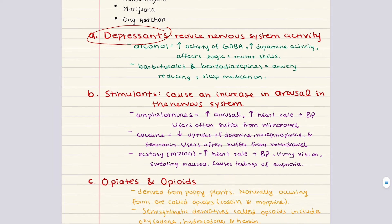Stimulants cause an increase in arousal in the nervous system, each by different mechanisms. The three categories are amphetamines, cocaine, and ecstasy. Amphetamines cause increased arousal by increasing the release of dopamine, norepinephrine, and serotonin at the synapse and decreasing their reuptake. This reduces appetite and decreases the need for sleep. Physiological effects include increased heart rate and blood pressure. Psychological effects include euphoria, hypervigilance, anxiety, delusion, and paranoia. Prolonged high-dose use can result in stroke or brain damage. Cocaine originates from a plant and also decreases reuptake of dopamine, norepinephrine, and serotonin — though by a different mechanism than amphetamines. Withdrawal is extremely difficult, leading to depression, fatigue, and irritability. Cocaine has anesthetic properties and is sometimes used in surgeries in highly vascularized areas like the nose and throat. Crack is a smokable form of cocaine that is highly addictive.